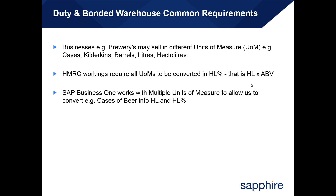Businesses, for example breweries, may sell in different units of measure — for example cases, kilderkins, barrels, litres and hectolitres. HMRC workings require all units of measure to be converted into hectolitres as a percentage of ABV, that is the hectolitres crossing the duty point multiplied by the ABV value. SAP Business One works with multiple units of measure to allow us to convert cases of beer into hectolitres and hectolitre percentages.